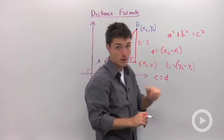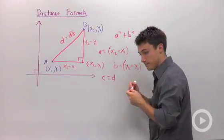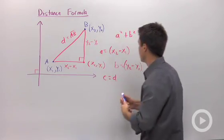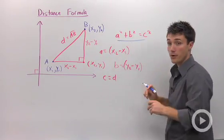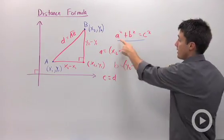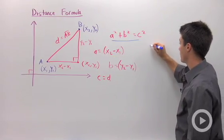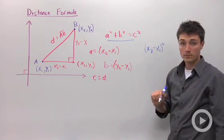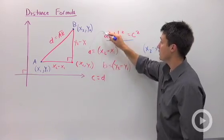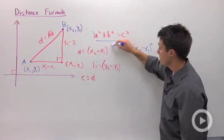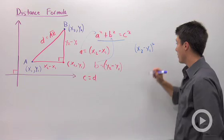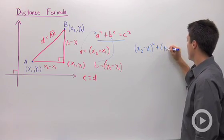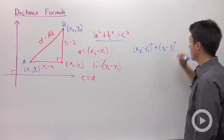So let's substitute in what we know. We're going to use the Pythagorean theorem. A is X2 minus X1, so we have (X2 - X1) squared. B we said was Y2 minus Y1, so I'm going to add (Y2 - Y1) squared.